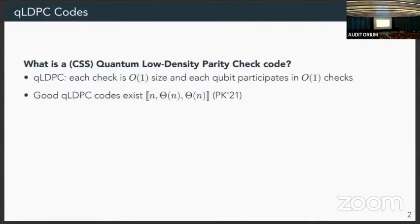So first, let me begin by just defining a quantum low density parity check code. It's simply one where each check is of constant size, and each qubit participates in a constant number of checks. In particular, we now know as of 2021 with the work by Pentalev and Kalachev that good quantum LDPC codes exist. So that is one that encodes a linear number of qubits with a linear distance.